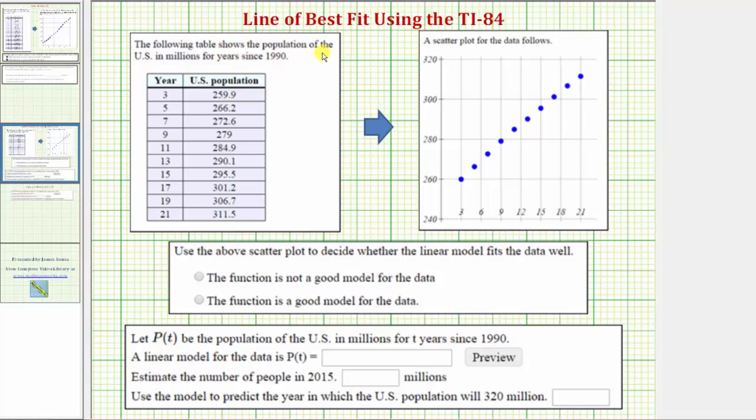The following table shows the population of the U.S. in millions for years since 1990. The first column gives the number of years since 1990, and the second column gives the U.S. population in millions. One way to analyze data is to plot the ordered pairs on the coordinate plane and create what's called a scatter plot.